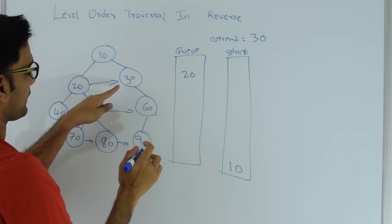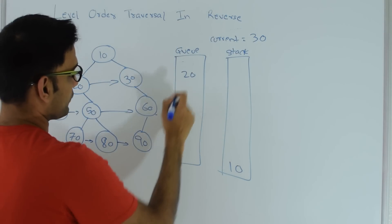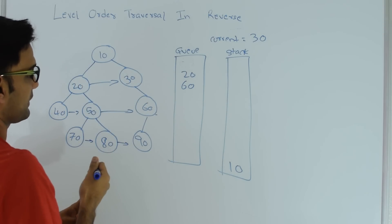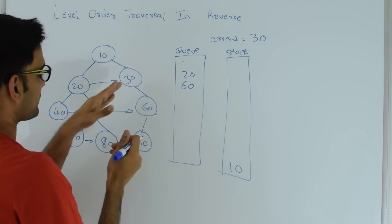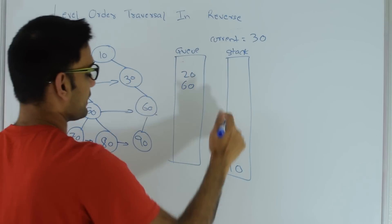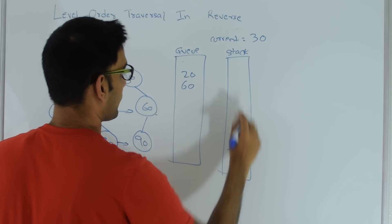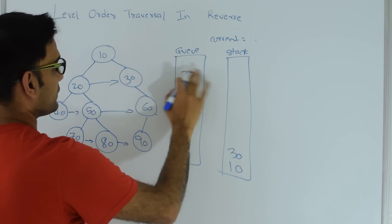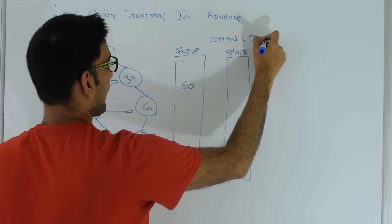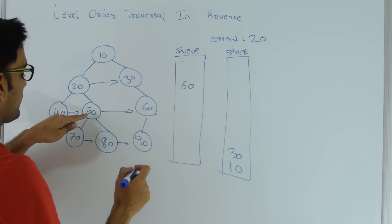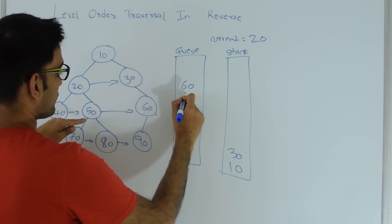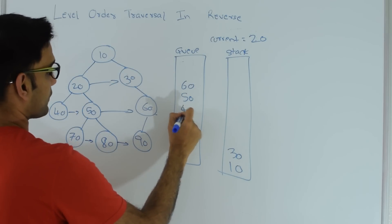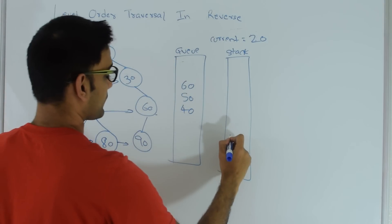We check if 30 has a right child — it does, so I push 60 into the queue. Then I check if 30 has a left child — 30 does not have a left child, so I push 30 into the stack. Then I pop from the queue so 20 comes out. 20 has a right child so that goes into the queue. 20 has a left child, 40, so that goes into the queue, and then I push 20 into the stack.